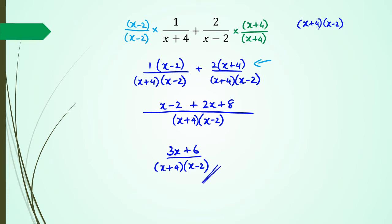Now some of you might see this as a cross multiplication situation — 1 times (x minus 2), then 2 times (x plus 4), with the denominators multiplying each other. That works well in some situations, but not all, where you can actually end up complicating the problem quite a bit. I'll show you an example of that later in this video. OK, so let's have a look at another question.